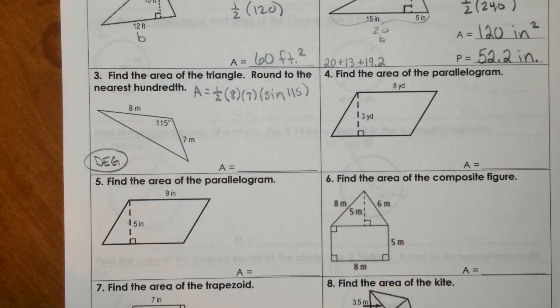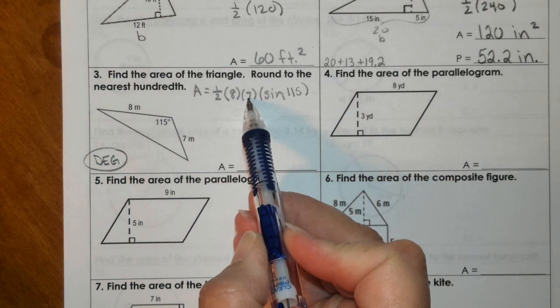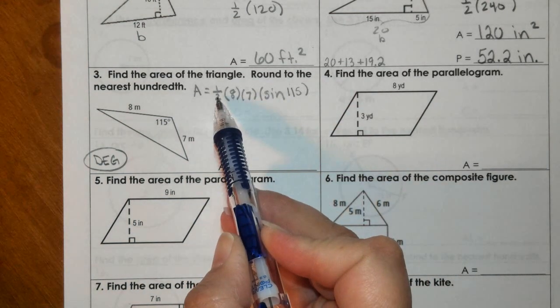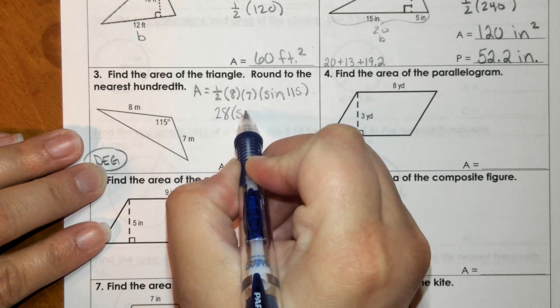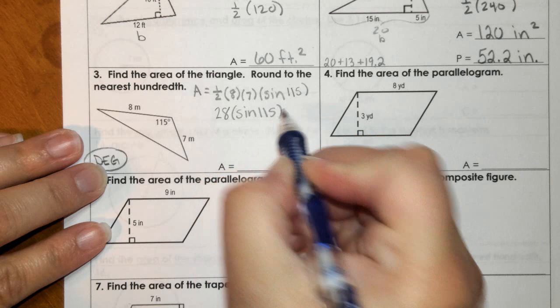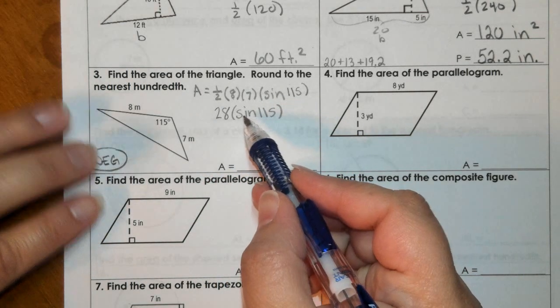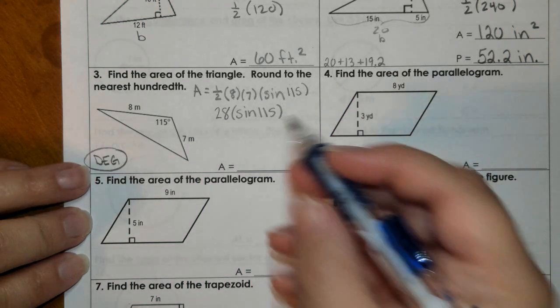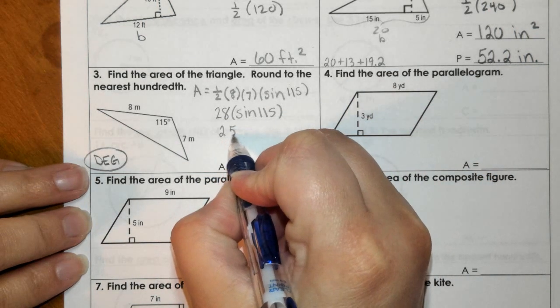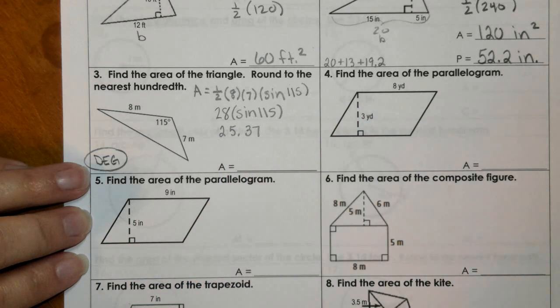So you would do area is one half times B times C, these two sides right here, 8 times 7 times sine of the angle. If it was me working this out, I would multiply the 8 times 7 and then divide that by 2, and that would be 28 times sine of 115. You've got to make sure you have it in degrees before you do 28 times sine of 115.